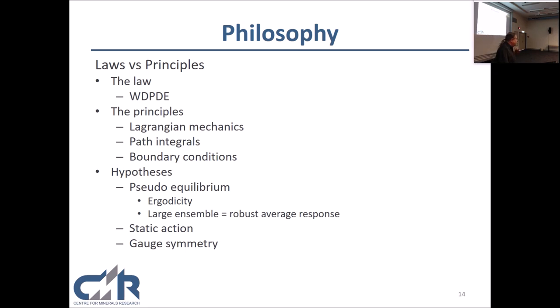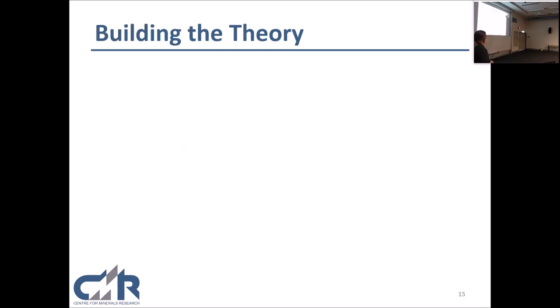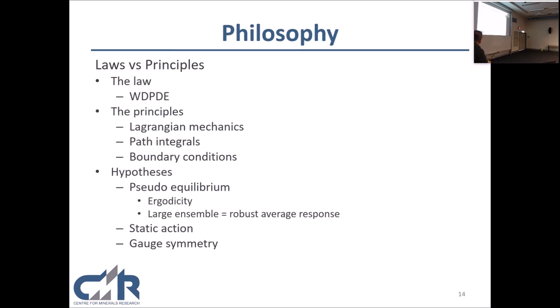The next great era of awakening of human intellect may well produce a method of understanding the qualitative content of equations. Today we cannot see that the water flow equations contain such things as the barber pole structure of turbulence that one sees between rotating cylinders. Basically, the equations don't tell you what's going on, what the system will do. They tell you what it can't do. The boundary condition, more often than not, will tell you what it will do. So the philosophy behind the solution was to consider the difference between laws and principles. In this particular case, the physics is, the laws of physics are not helpful. If we think of this as analogous to Einstein's field equations, someone's estimated there are 10 to the 500 solutions, which is another way of saying infinite.